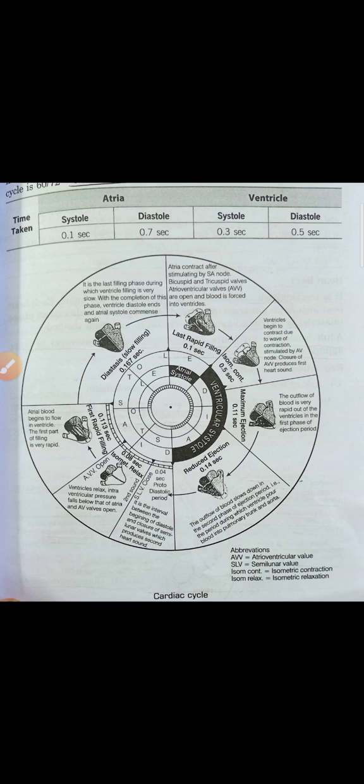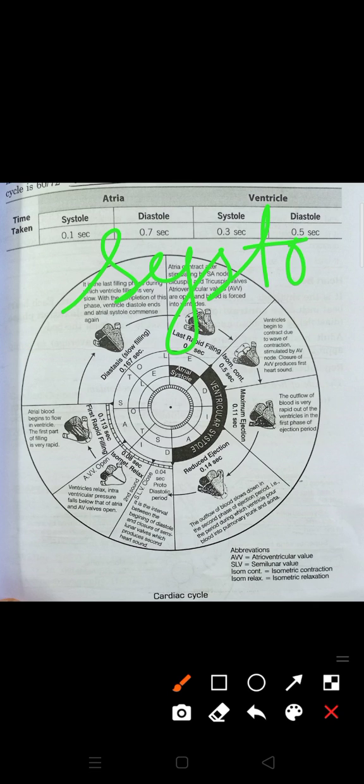Today we will discuss the cardiac cycle. The structure and functioning of the heart, including different parts of the heart, have already been discussed previously. Now we will discuss the cardiac cycle. I will use two terms: one is known as systole and another is known as diastole.